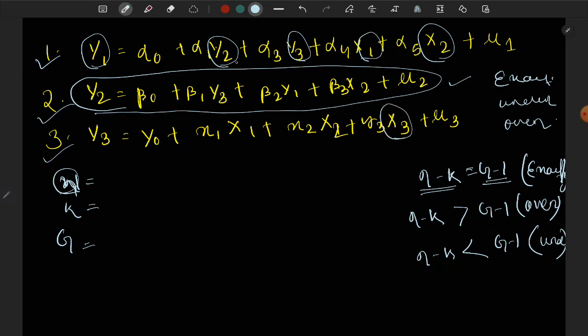k is the number of variables in the respective equation that we're asked about in the question. In equation 2, we have y2, p1, p2, p3, B2 - so 4 variables. g is the total number of equations, which is 3.